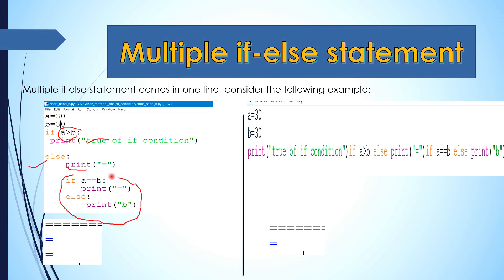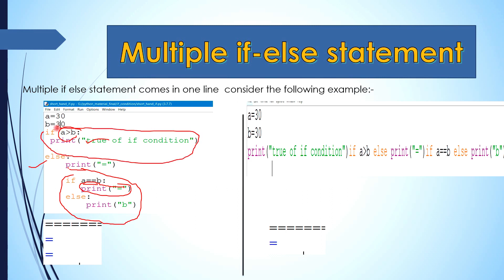Here we will say this condition is true if a equals b. If this condition is true, we execute the if block. Otherwise, if this condition is false, we go to the else block. If the condition is true, the statement executes.